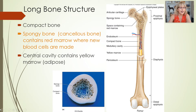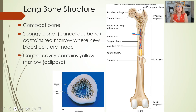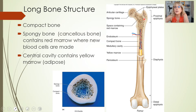All the way around the outside is compact bone. Bones are made out of two different kinds of bone tissue: compact bone, which almost looks like plastic and goes all the way around the outside of the bone, and spongy bone, which looks like a sponge and is found on the interior.